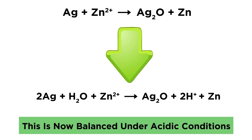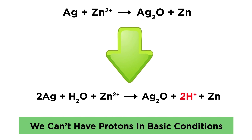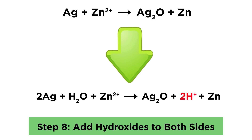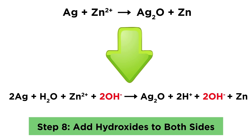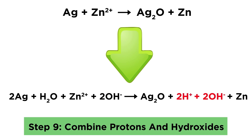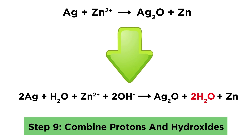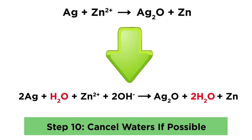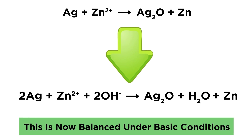If conditions were acidic, we would be finished. But since they are basic, there is a little more work to do, because it doesn't make sense to say that protons exist in basic solution. First we note how many protons there are, and we add that number of hydroxides to both sides — so that's 2 hydroxides on each side. Then anywhere we see protons and hydroxides, we can combine these to form water molecules, so that makes 2 waters on the right. Then we cancel any like terms that remain. In this case, we can eliminate one water molecule from both sides. And this will be the balanced redox reaction under basic conditions, with hydroxides listed instead of protons.